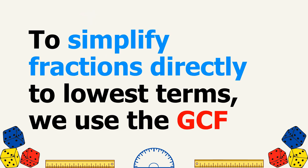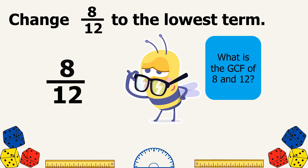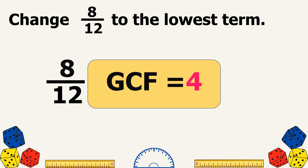To simplify fractions directly to lowest terms, we use the GCF. Let us have this example: change 8 twelfths to the lowest term. So let us find the GCF of 8 and 12. The GCF of 8 and 12 is 4.